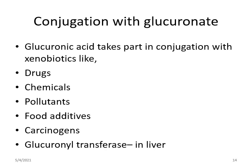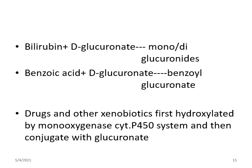Glucuronic acid plays a specific role in phase 2 detoxification or conjugation reactions. It conjugates with xenobiotics including drugs, chemicals, pollutants, food additives, carcinogens, etc. The enzyme glucuronyl transferase catalyzes the conjugation of UDP glucuronic acid with these substances, converting toxic and insoluble compounds into non-toxic and soluble compounds for easy excretion. For example, bilirubin plus D-glucuronic acid forms mono- or di-glucuronides; benzoic acid plus D-glucuronic acid forms benzyl glucuronide. Drugs and other xenobiotics are first hydroxylated by the monooxygenase cytochrome P450 system, then conjugated with glucuronic acid.